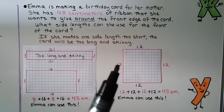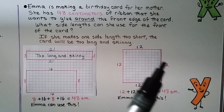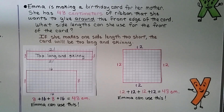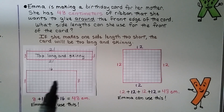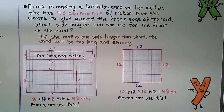She could also use a side length of 12 on all four sides, because 12+12+12+12=48, which is 4 times 12. She could use any of these options — if she wants a long skinny card she could, and she might have more surface area to write 'Happy Birthday Mom' with some of these lengths and widths.